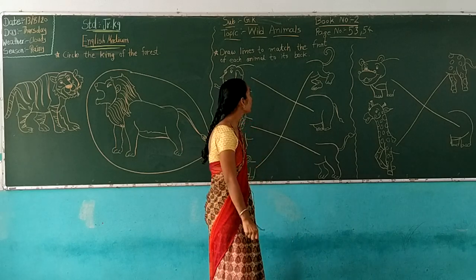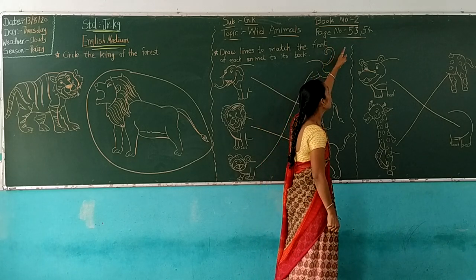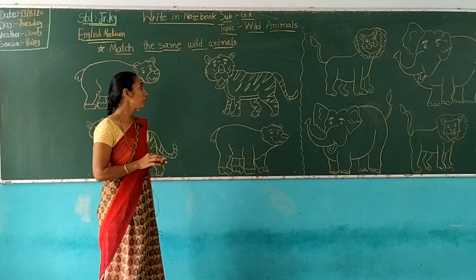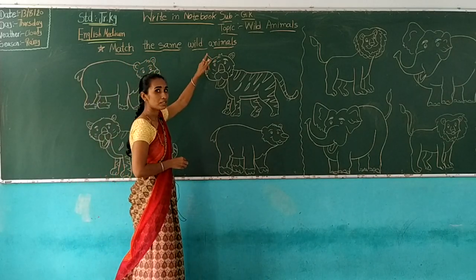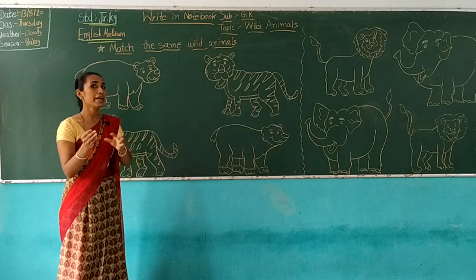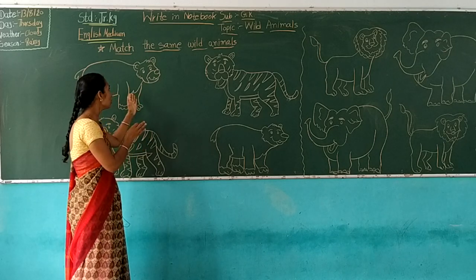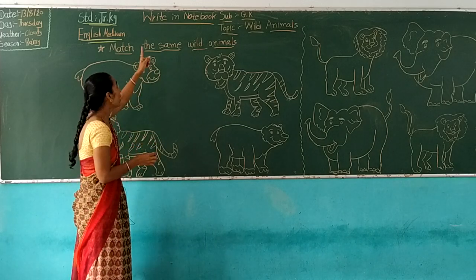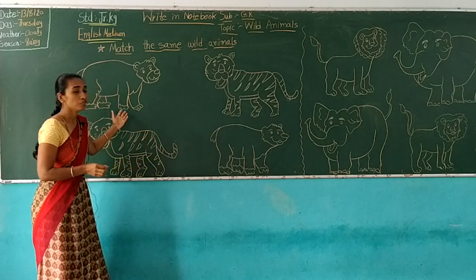So children, do you understand this exercise? Yes — very good! Book number 2, page number 53 and 54. Now friends, match the same wild animals. Look at this picture carefully and match the same animal.